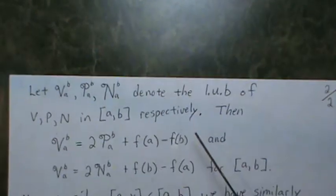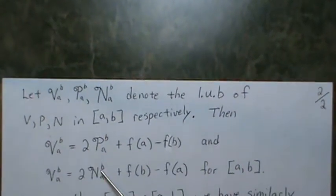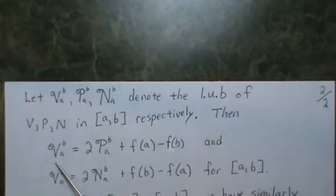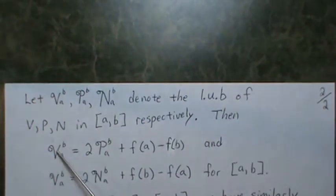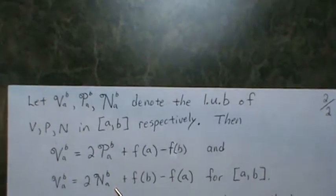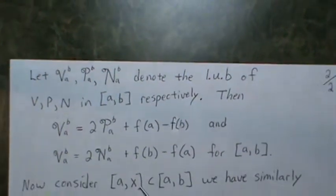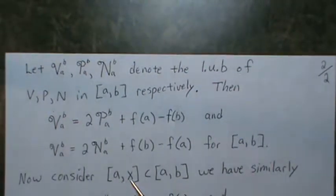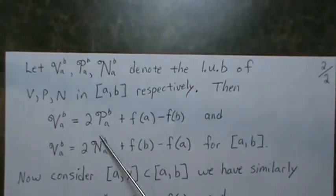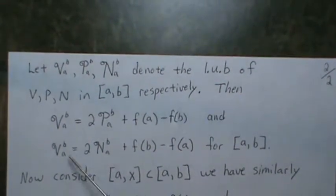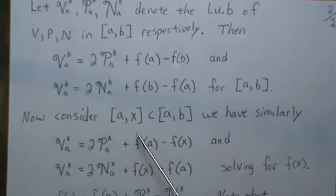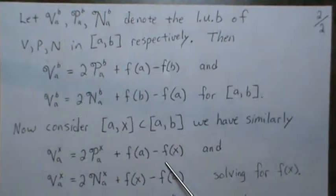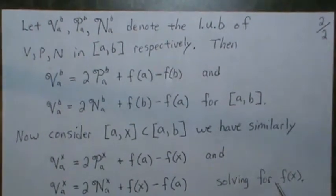Using the two identities from before and substituting in these least upper bounds, we get two corresponding equations involving script-V, script-P, script-N, and f(b) minus f(a). Now let's consider a sub-interval from a to x, where x ranges from a to b. For this interval we apply the same identities, going from a to x, and we get two analogous equations involving script-P(a,x) and script-N(a,x).